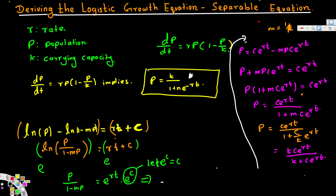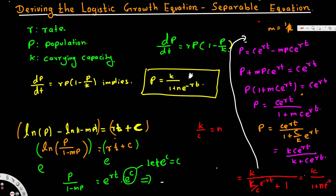Dividing numerator and denominator by C·e^(rt): the numerator becomes k, and the denominator becomes k/C · e^(negative rt) plus 1. Letting n equal k over C, this becomes p equals k over (1 plus n·e^(negative rt)). We have derived the logistic growth equation.